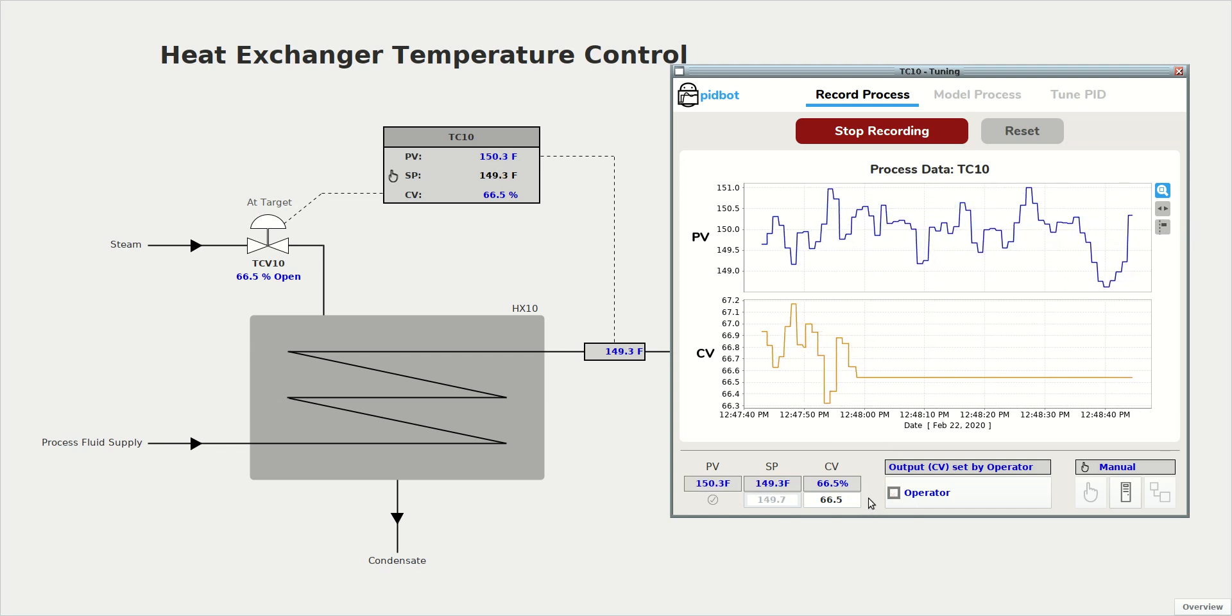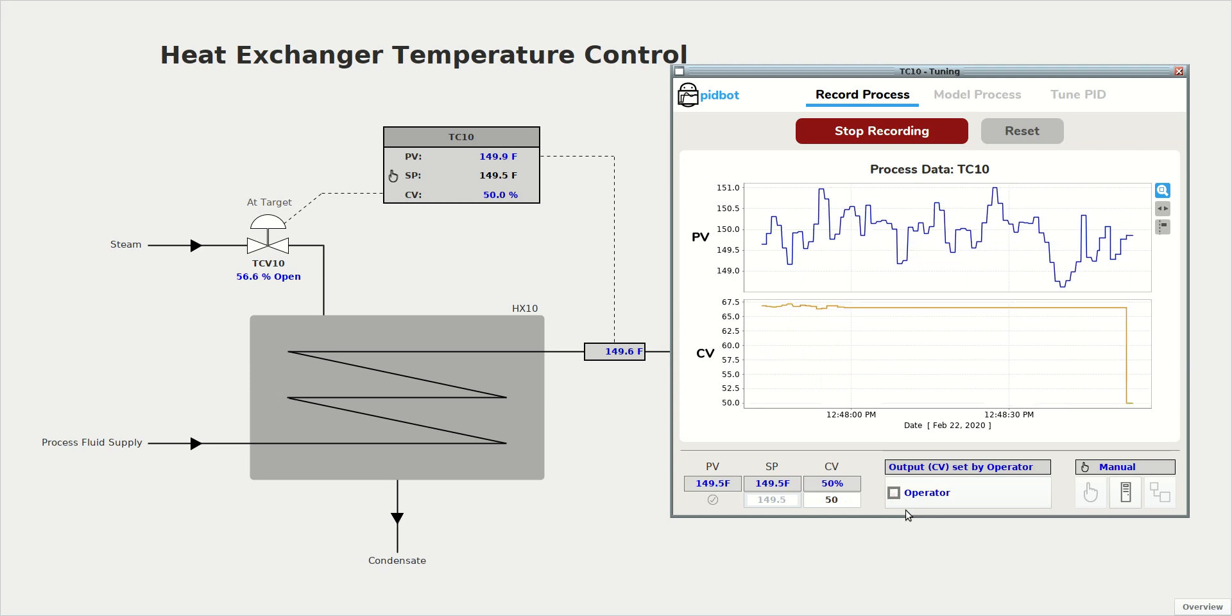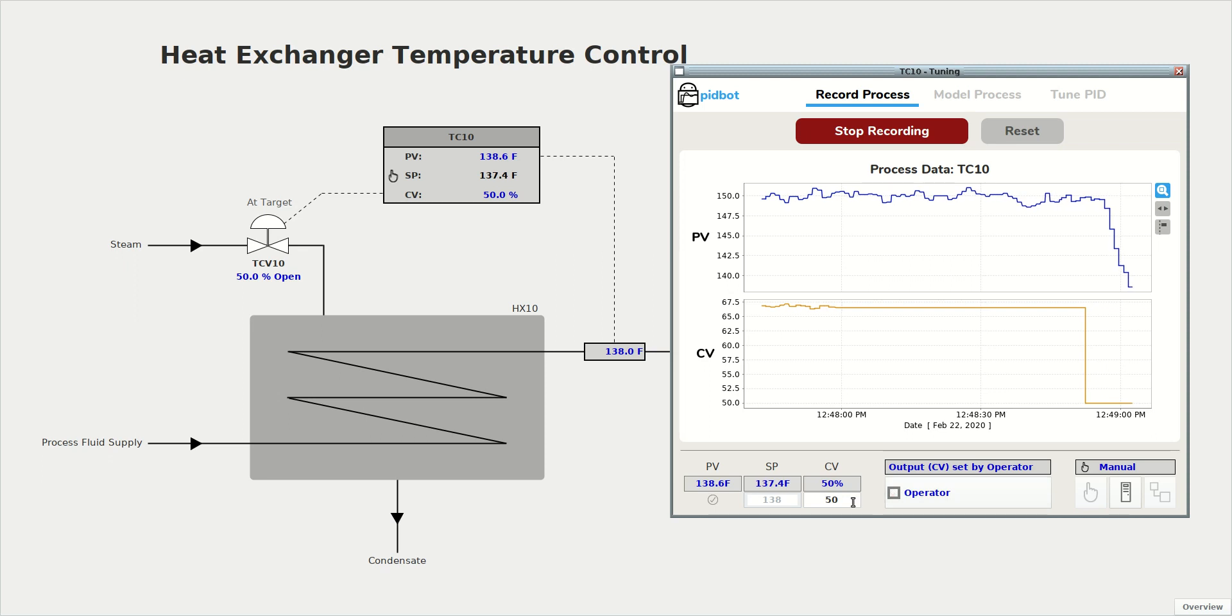So we can go ahead and bump the process. We're around 66% on the valve. Let's go down to 50. And you want to make sure you bump the process fairly sharply so that your response is far beyond any noise or disturbances in the temperature data. And in our case, we have a very clear response to our change in valve position.